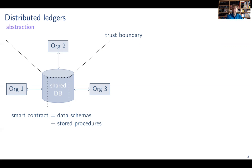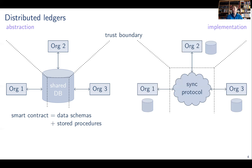In that view, a smart contract is essentially just defining the data schema and the algorithms in the smart contract correspond to stored procedures in the database. Now the implementation in practice looks of course differently. So the shared database is just an abstraction. Every organization keeps their own database, but there is a synchronization protocol that reaches across those trust boundaries.